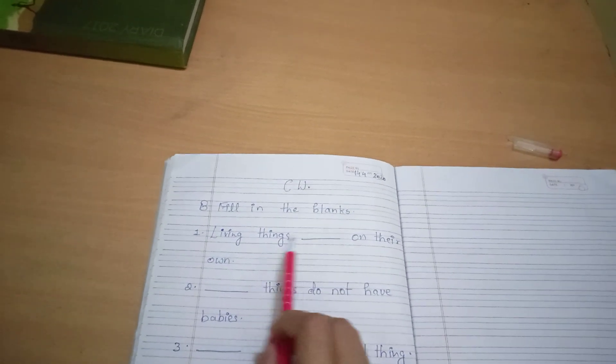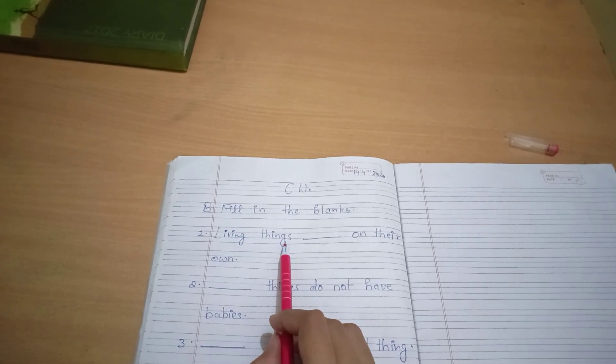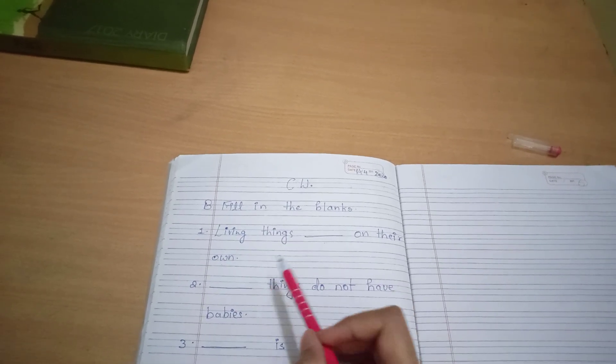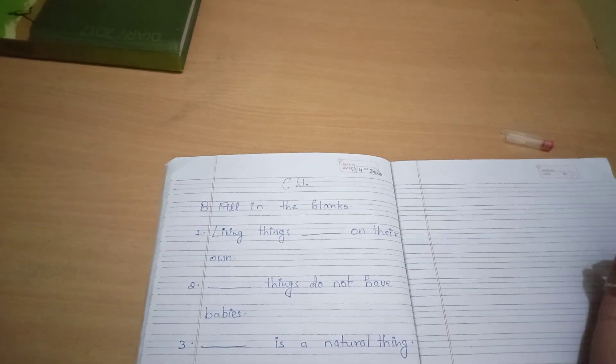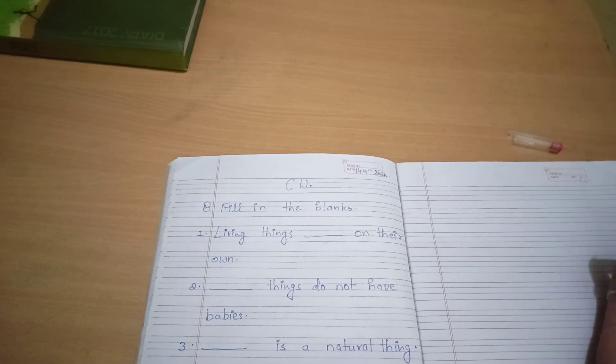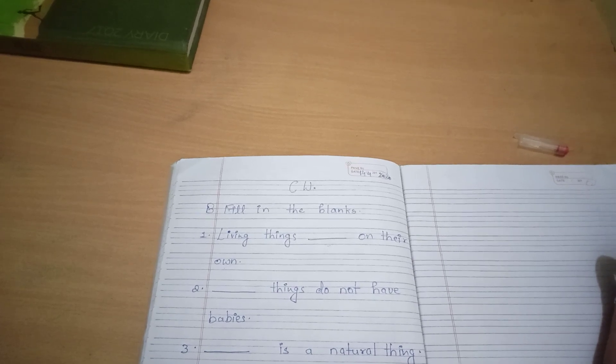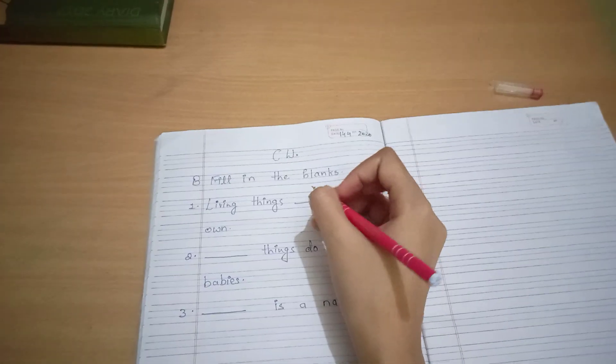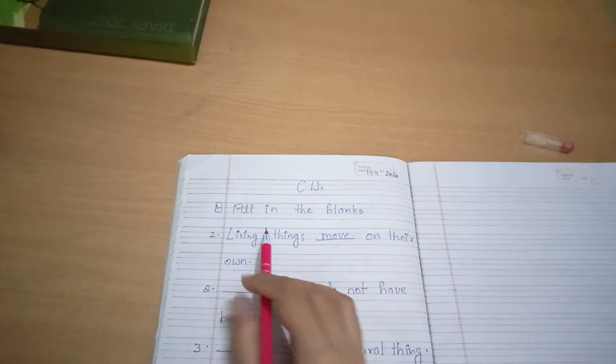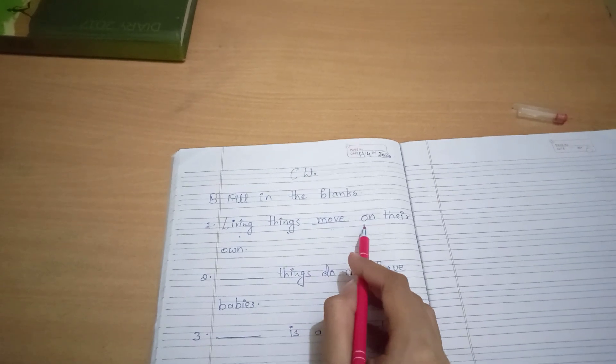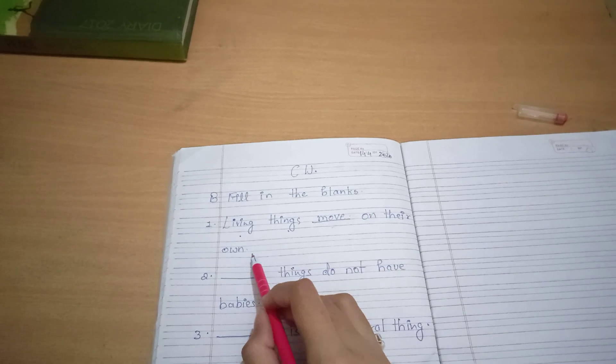So first is living things blank on their own. That means living things, what does it do? Living things move and grow. That means living things move on their own. Living things move.